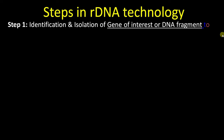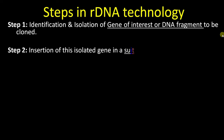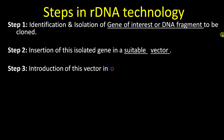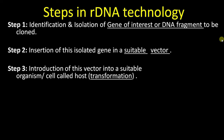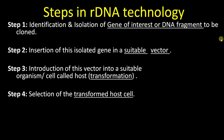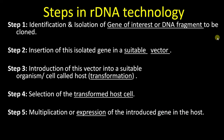Moving into the steps in recombinant DNA technology. The first step is identification and isolation of gene of interest or DNA fragment to be cloned — here our gene of interest is the insulin gene. Second step is insertion of this isolated gene into a suitable vector. Then we introduce this vector into a suitable host — the process called transformation. Then we select the transformed host cell, followed by expression of the introduced gene inside the host for producing our gene product or insulin in large amounts, and finally purification of the protein.